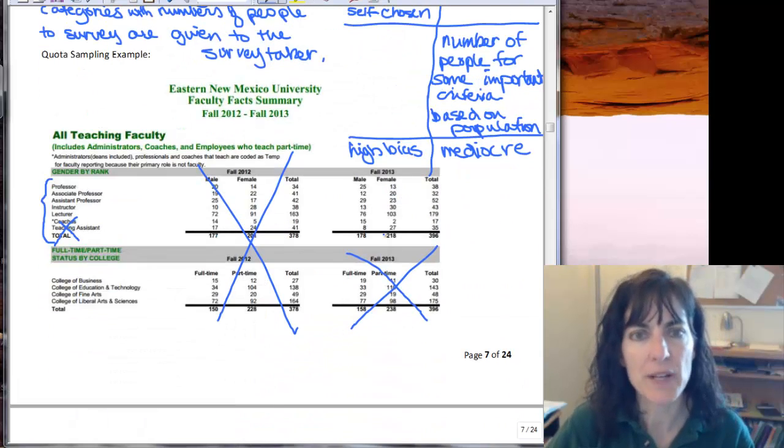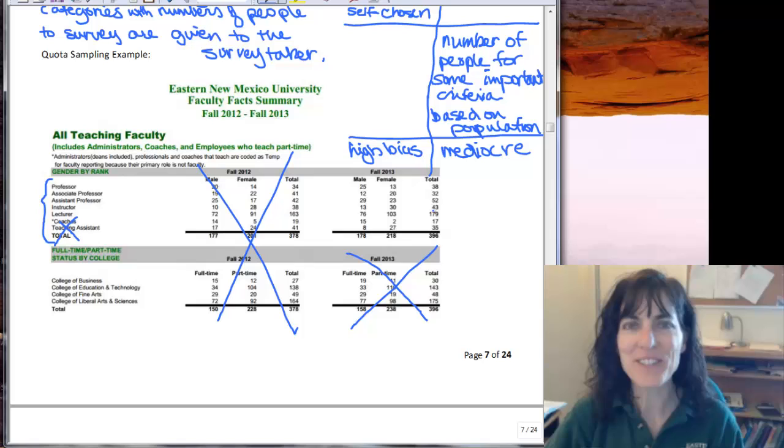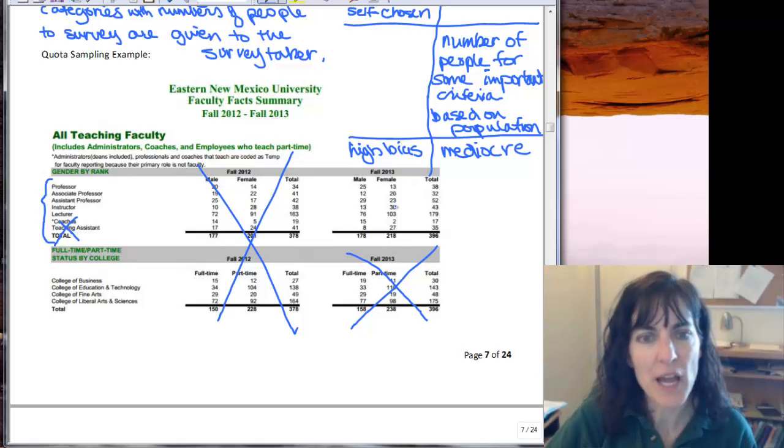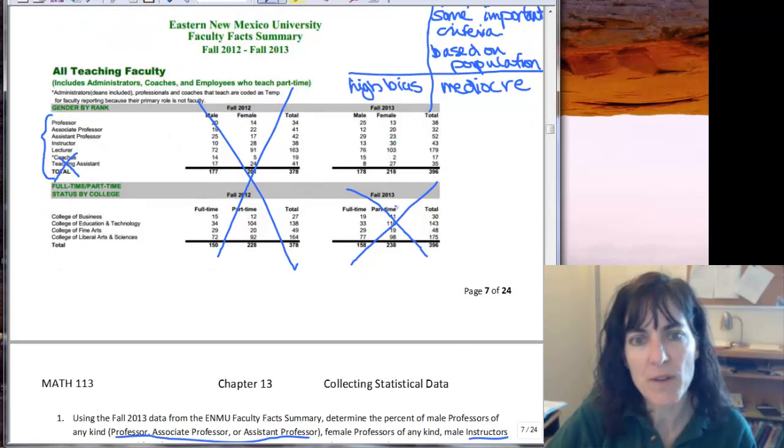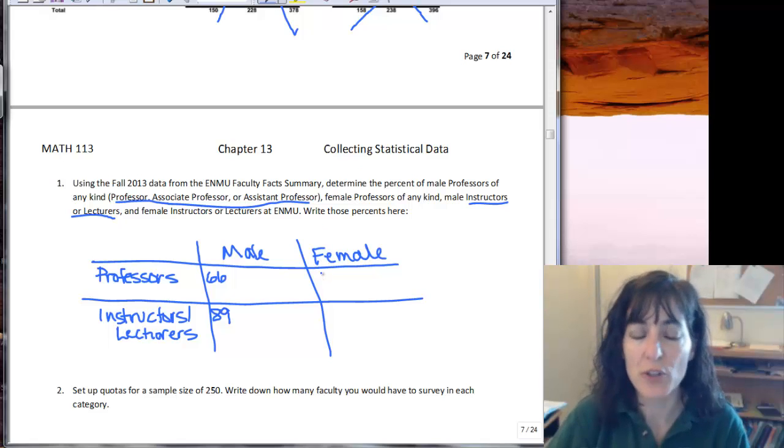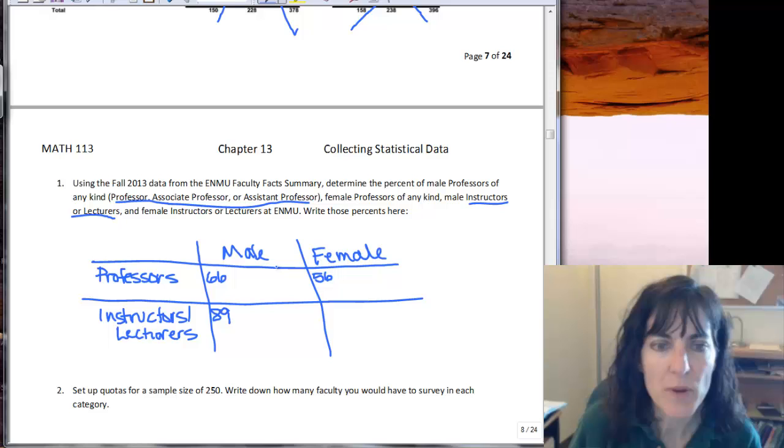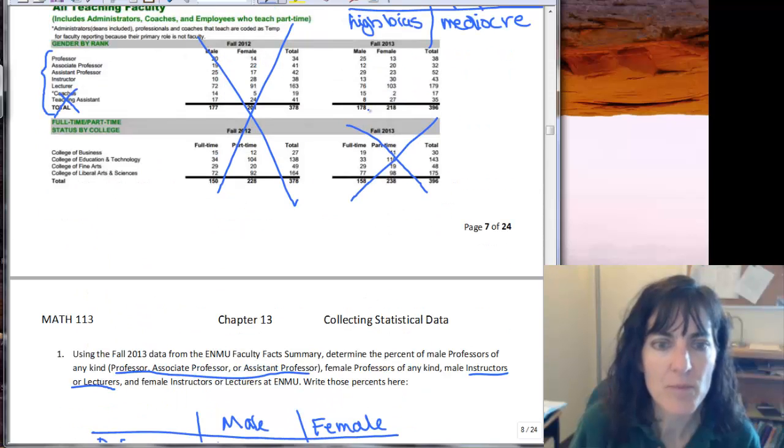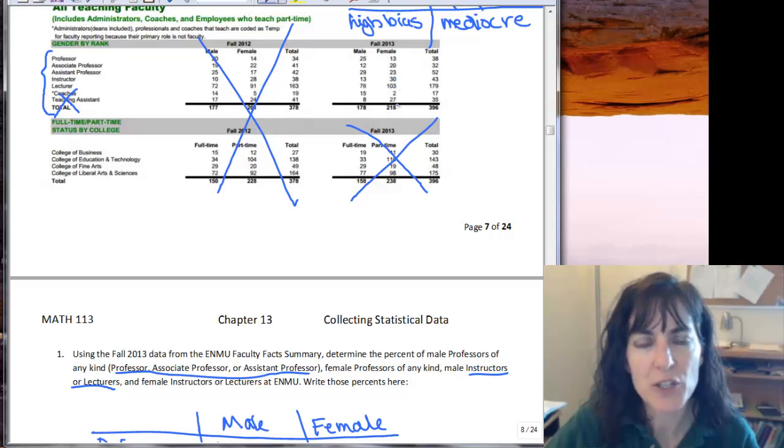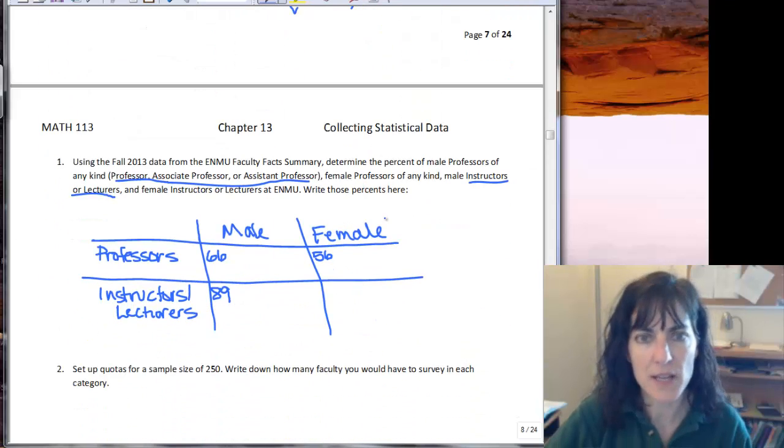And then I need female professors. I haven't actually done this calculation yet so I really don't know how many we have in each category. So it's the first three categories on female: 20, 40, 56. So we have 56 female professors and then instructors or lecturers we have 133.